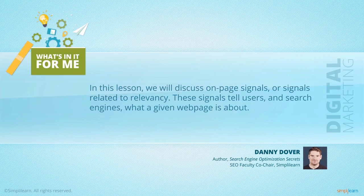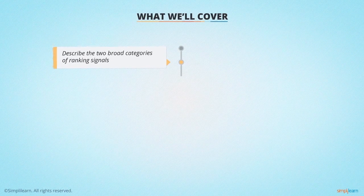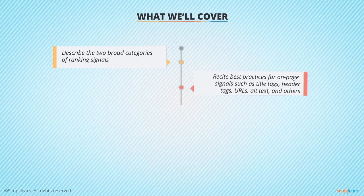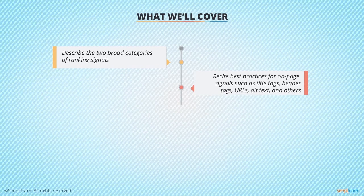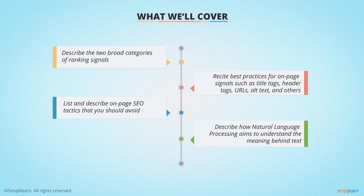These signals tell users and search engines what a given website is about. By the end of this lesson, you'll be able to describe the two broad categories of ranking signals, recite best practices for on-page signals such as title tags, header tags, URLs, and alt text, list on-page SEO tactics you should avoid, and describe how natural language processing aims to understand the meaning behind text.